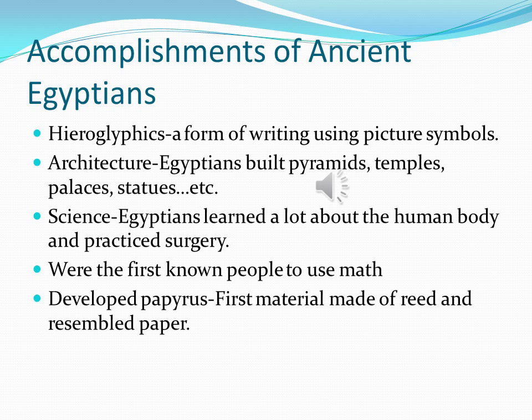Now let's discuss the accomplishments of ancient Egyptians. Hieroglyphics was a form of writing using picture symbols. Architecture: Egyptians built pyramids, temples, palaces, statues, etc. In science, Egyptians learned a lot about the human body and practiced surgery, and they were the first known people to use math. Egyptians also developed papyrus, the first material made of reed that resembled paper.